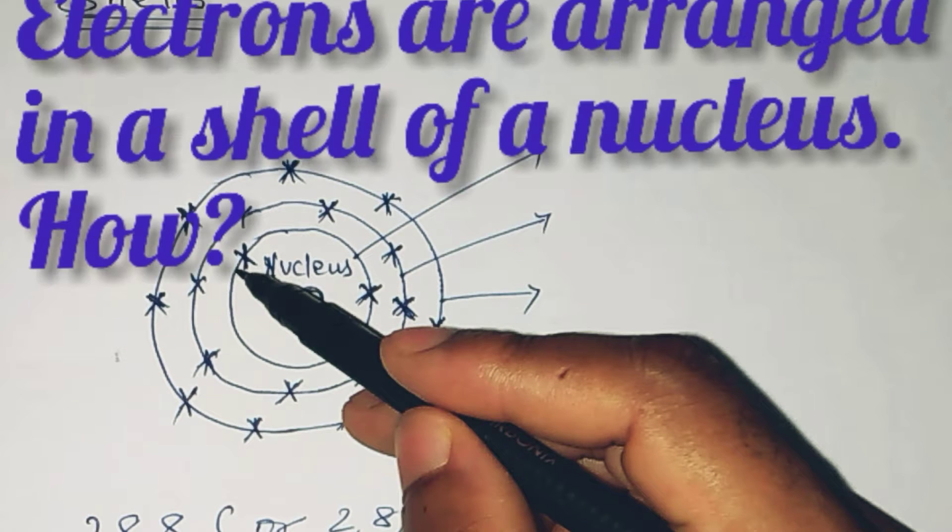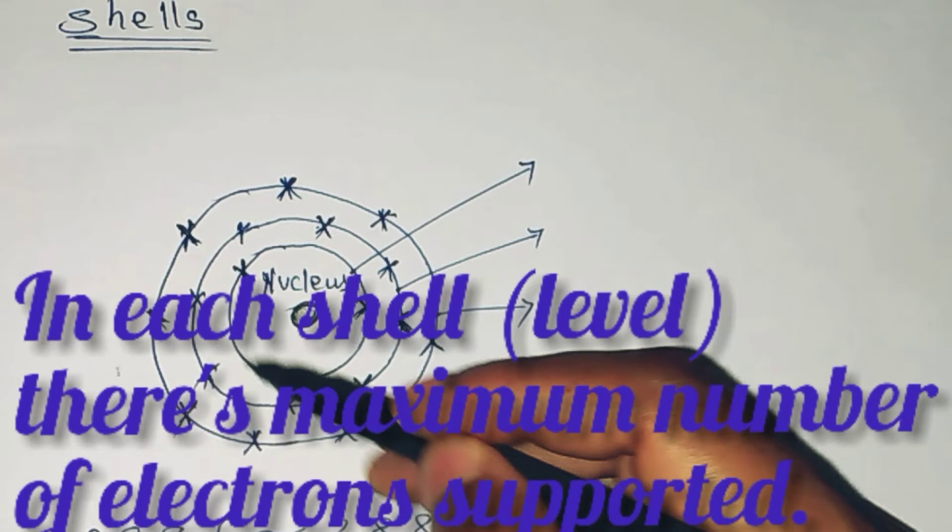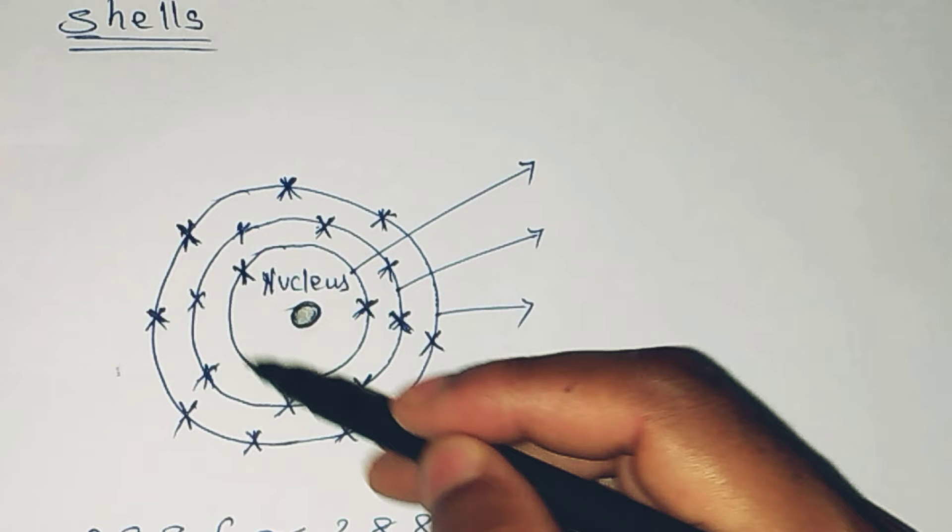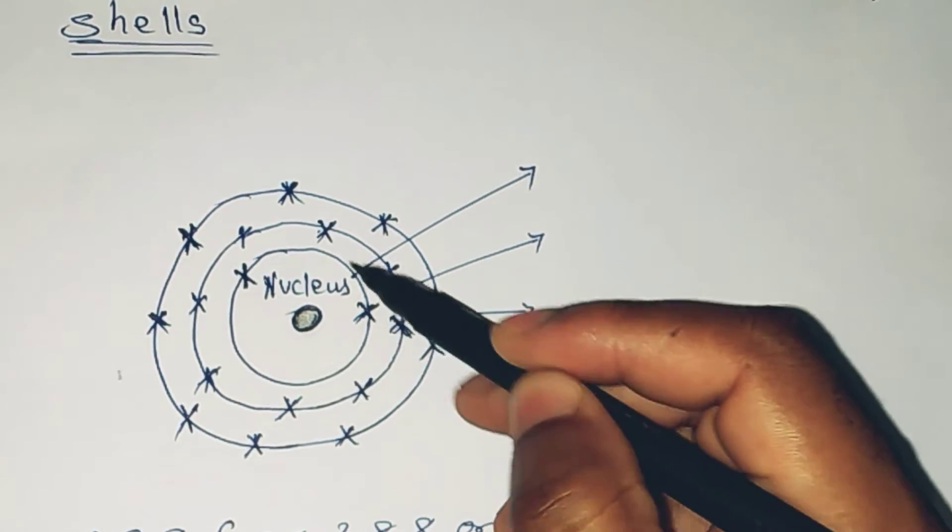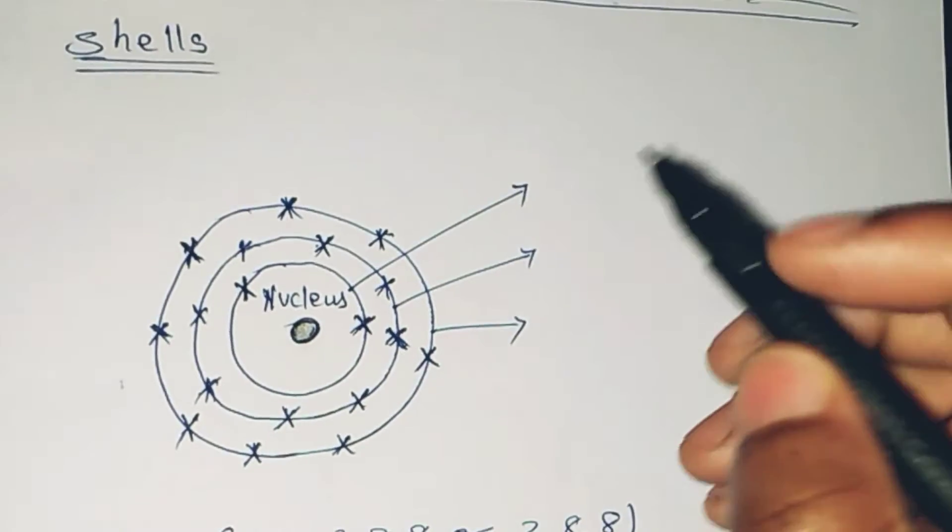These levels we have here—this is called the first shell, this is the second shell, and this is the third shell.